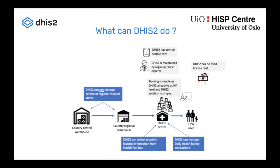What can DHIS2 do, and equally importantly, what can it not do? As a starting point, it has proven to be a stable system implemented broadly and lasting over time. There's also the HISP network, existing training, guidance, materials, and academies that provide a very good basis for implementing and maintaining the system independently of the University of Oslo and HISP Center. Being open source, there are no licensing costs, and the cost of maintenance covers direct infrastructure costs, training, and retraining staff.